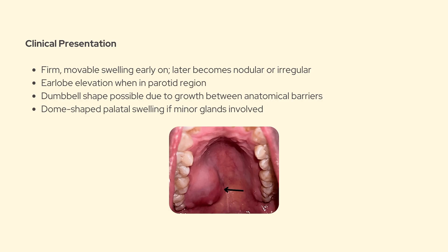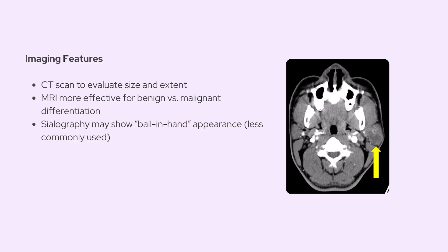When it's in the intraoral minor salivary glands, most commonly in the palate, you might see a dome-shaped, non-tender swelling in the palatal region. For imaging, a CT scan is usually the first step to assess size and location. However, to differentiate between benign and malignant forms, MRI tends to be more reliable. Sialography might also show what's called a ball-in-hand appearance — a classic clue, though less commonly used these days.